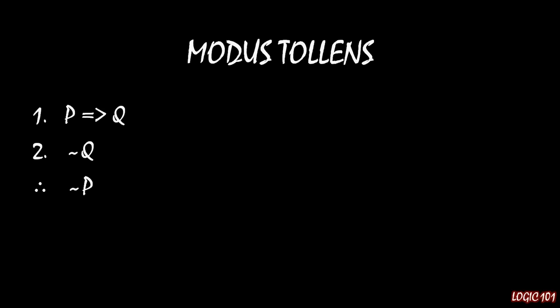Remember back to modus tollens? For that, we had two premises: p implies q, and not q, and we used that information to conclude not p. That's fine — this is a valid argument. You can use this all day, every day, and no one will complain.